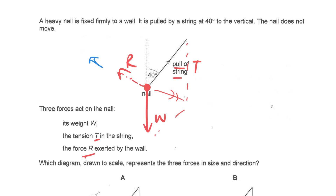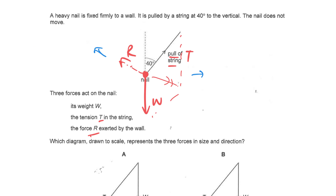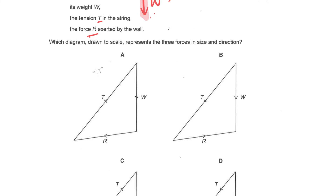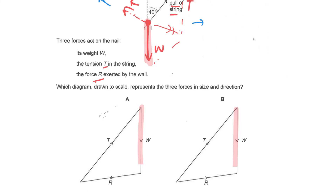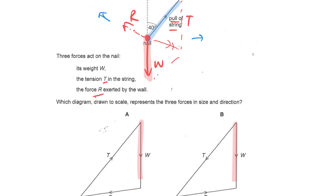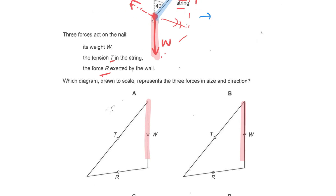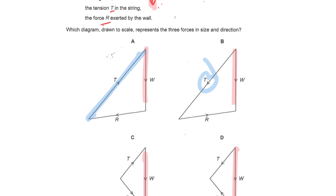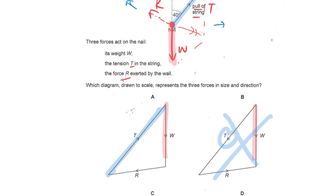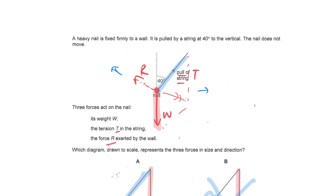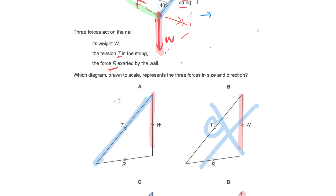Using color coding to check each option: all options show weight pointing downward — that's correct for all. Checking the tension: it should be diagonally to the top right. Options B and D show incorrect tension directions, so B and D are eliminated. That leaves options A and C as possible answers.